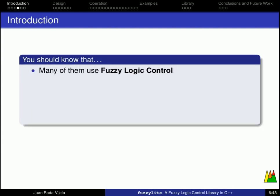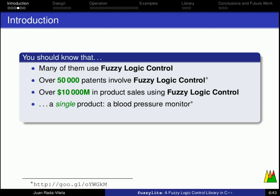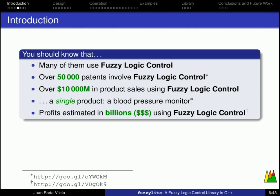Also, you should know that most of them, if not all of them, use fuzzy logic control in one way or another. There are over 50,000 patents involving fuzzy logic control, over $10 billion in product sales using fuzzy logic control, and I am only talking about a single product, which is a blood pressure monitor. The profits of the industry using fuzzy logic control are estimated in the billions of dollars. And the whole idea of fuzzy logic control started like 50 years ago or so.